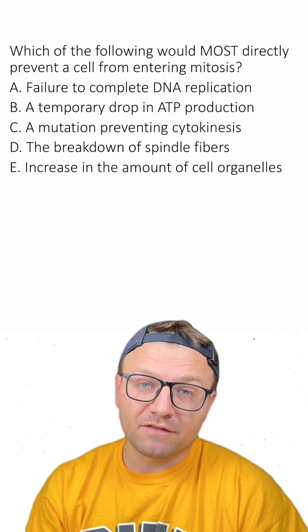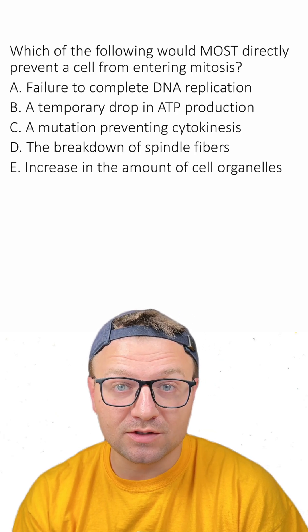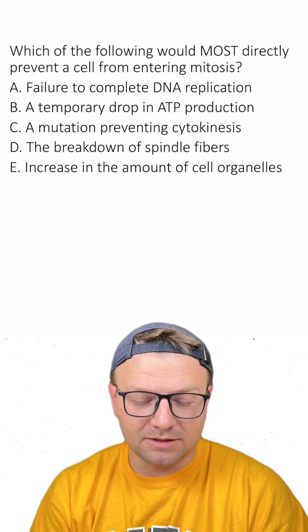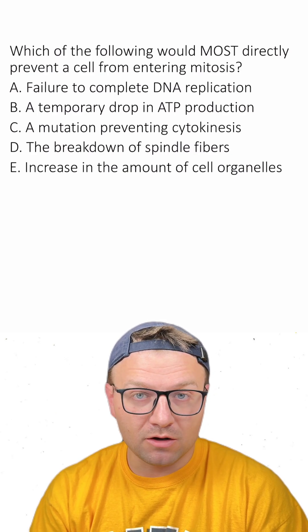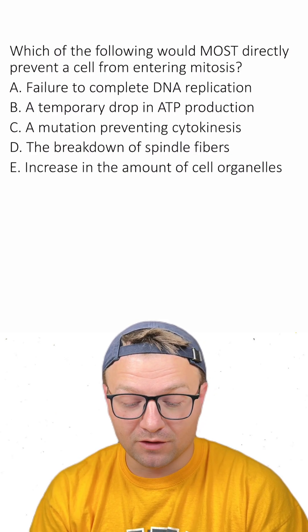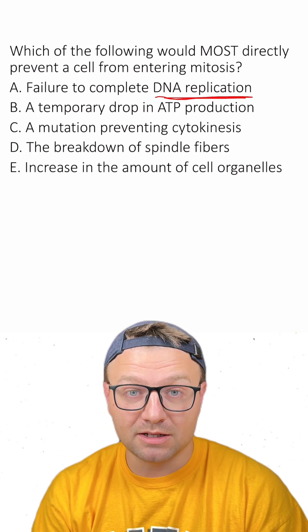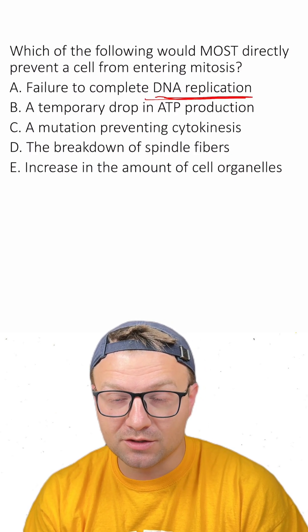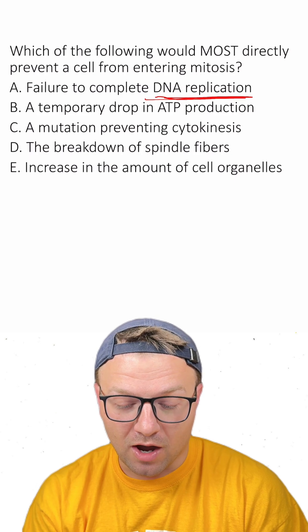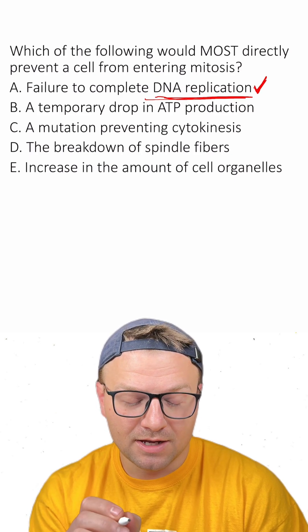Which of the following would most directly prevent a cell from entering mitosis? A, failure to complete DNA replication. That already sounds like my answer. If we don't have DNA replication fully complete, then the cell can't go through mitosis because there's not going to be enough DNA. So I already think this is the right answer.